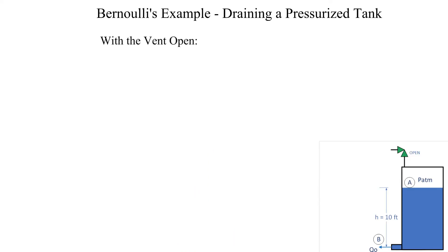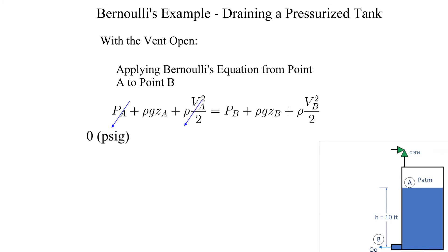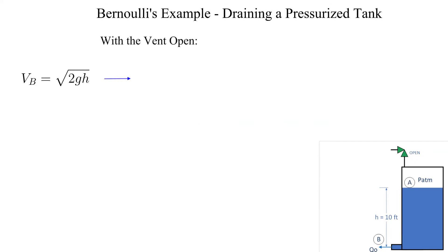Starting with the vent open, we calculate the flow. Using Bernoulli's equation, we simplify it based on a large tank draining to the atmosphere. The velocity at the outlet, B, is equal to the square root of two times the gravitational constant times the height of the water. This is the well-known Torricelli's relation and is likely written down without simplifying Bernoulli's equation. The calculated velocity with the vent open is 25.4 feet per second.